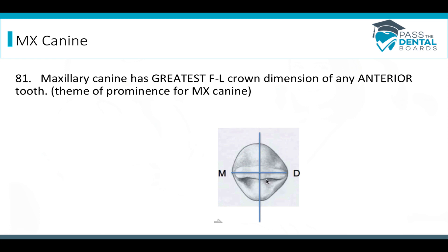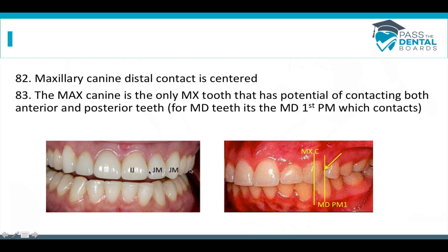The maxillary canine has the greatest facial-lingual crown dimension of any anterior tooth, and this has to do with the cervical prominence — because that bulges out so much, it makes for a long facial-lingual dimension. Note it says anterior tooth, because molars are much wider in a facial-lingual dimension. For the maxillary canine, the distal contact is going to be pretty centered — the contact point is just about in the middle of the tooth. We already know that from the memory aid 'I just jacked Michael Jackson's moped,' which can answer a good string of questions on the test.